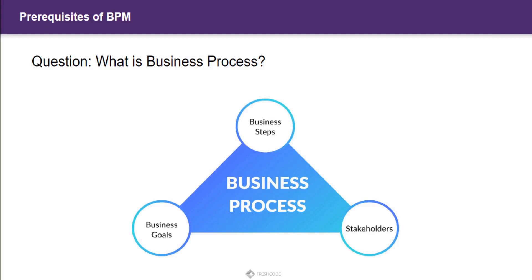A normal process can be executed at a certain time and may or may not be repetitive, but a business process is repetitive in nature. For example, if you have a software company and have built a school management system Android application, your sales team will daily call schools, principals, and management to get them to buy your software. This is a day-to-day operation to achieve the sales target and make your business profitable.